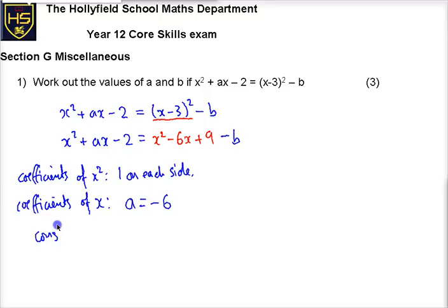If we look at the constants, i.e. the numbers on both sides, we can see we've got minus 2 on this side, and on this side we've got plus 9 minus b. So we can solve this, or we can just look at it and see that b must be, well minus b, b must be 11, mustn't it?